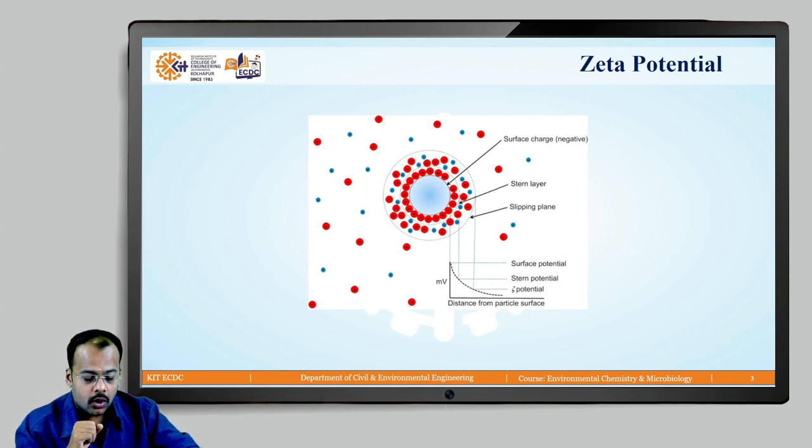Now, they are closely held to each other, positive and negative closely held to each other. Next, as soon as we go away from it, then there is a mixing of positive and negative ions at the outermost layer. At the outermost layer, you can see that they are loosely held.